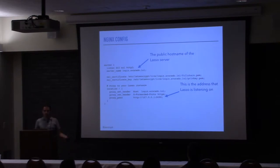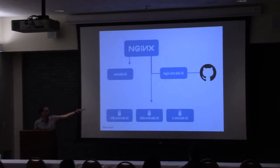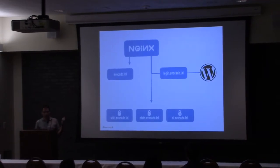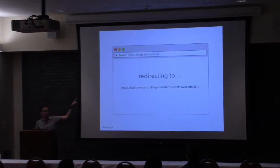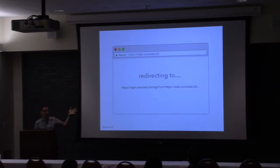With this setup, you can configure Lasso to authenticate users in a number of different ways depending on what you're trying to do. It has built-in support for GitHub and Google OAuth. You can even point it at your own WordPress blog to use your own WordPress users as your user store, or point it at a custom OAuth server. So this ends up working like this: when everything is set up, someone visits stats.avocado.lol, Nginx asks the Go microservice if the user is logged in. There's no cookie, so that service returns 401, which redirects the user to the login page.